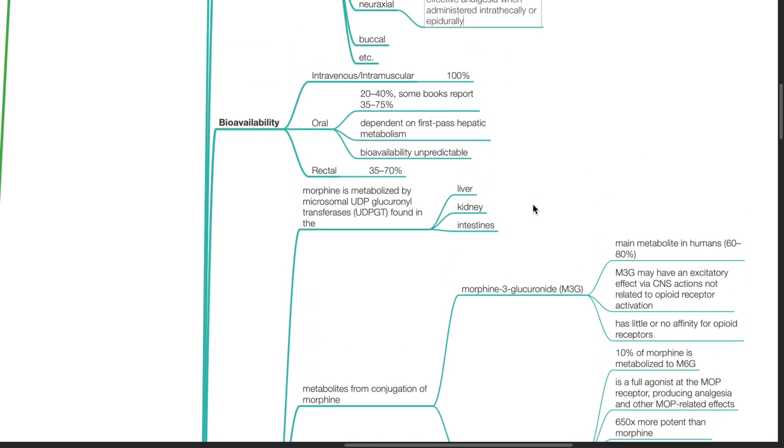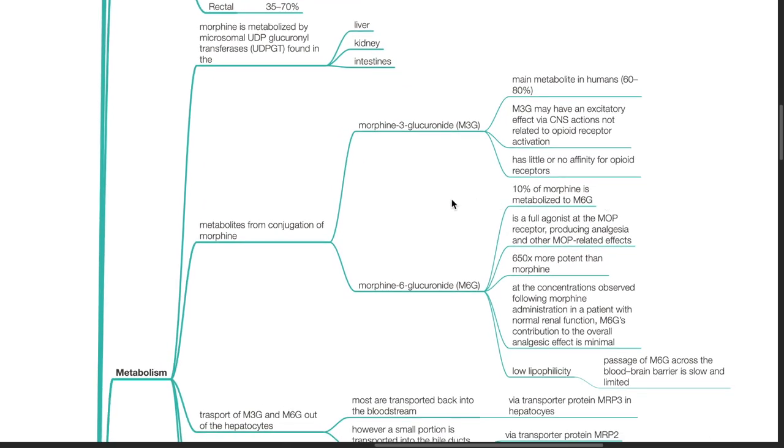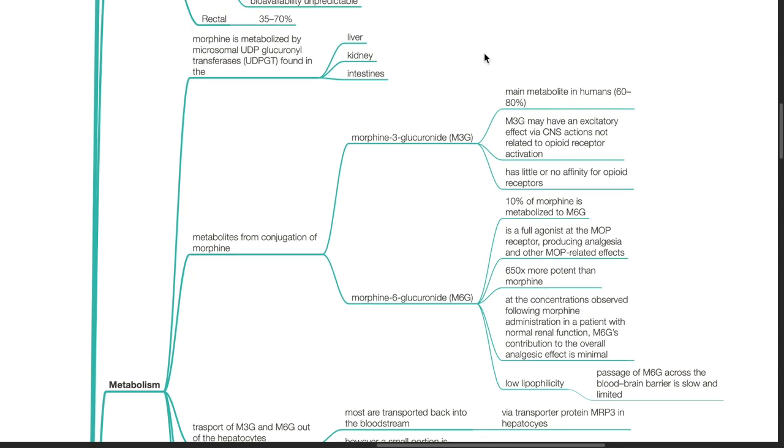Metabolism of morphine. Morphine is metabolized by microsomal UDP glucuronosyltransferases found in the liver, kidney and intestines. Metabolites from conjugation of morphine includes morphine-3-glucuronide and morphine-6-glucuronide. M3G is the main metabolite in humans, consists of 60 to 80%.